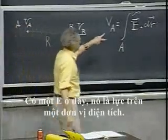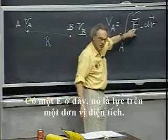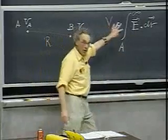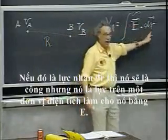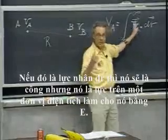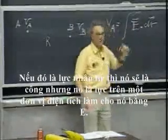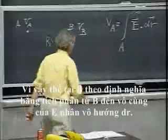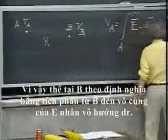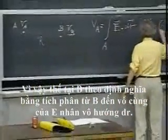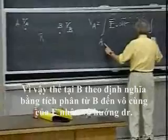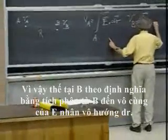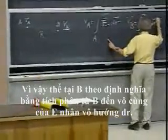There's an E here, which is force per unit charge. So it is not work. If it were force dr, it would be work, but it is force per unit charge that makes it E. So the potential of B, by definition, is the integral from B to infinity of E dot dr.